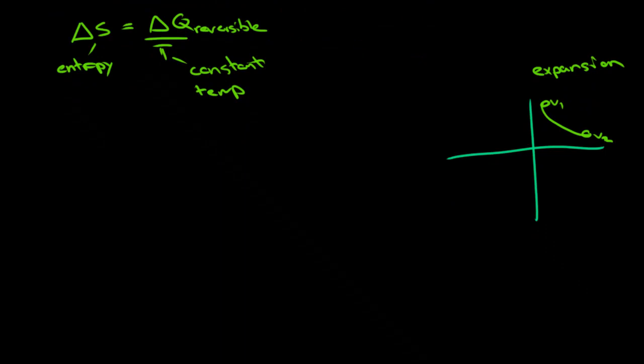In an isothermal process, we know that the change in Q is the change in work. So to write this in terms of the change in entropy, we would have delta S equals the change in work over T.